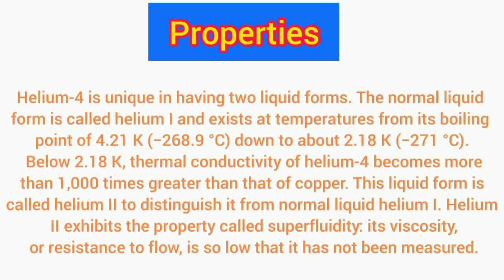Now the properties of helium. Helium-4 is unique in having two liquid forms. The normal liquid form is called helium-I and exists at temperatures from its boiling point of 4.21 K (minus 268.9 degrees Celsius) down to about 2.18 K (minus 271 degrees Celsius).